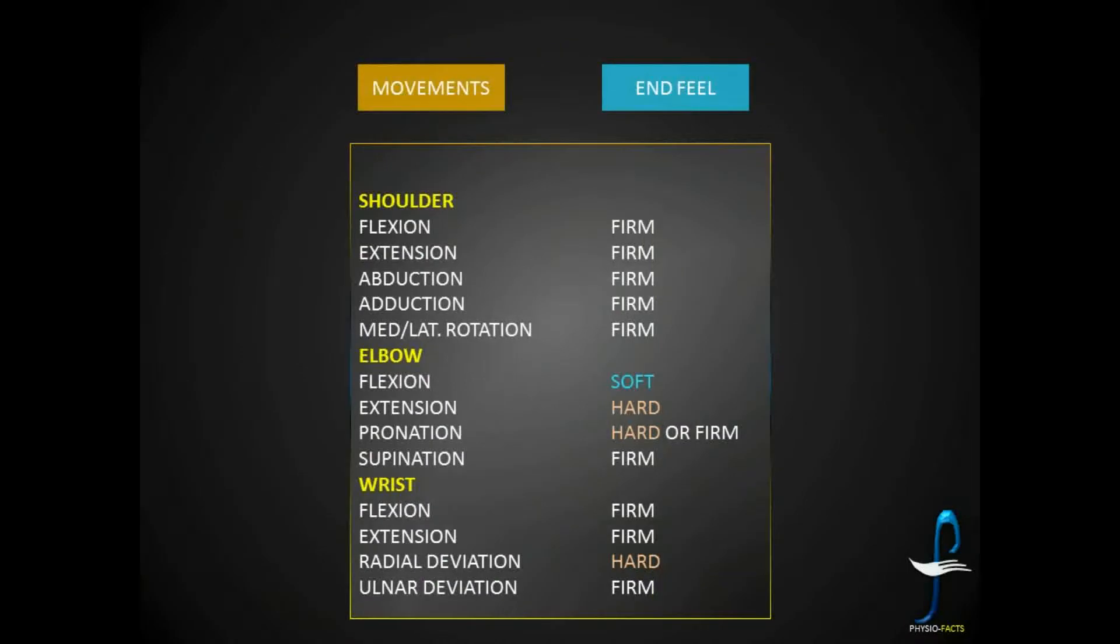One more important point is that end feel has to be checked for each and every movement in the joint. Let us see the individual end feel of each movement in the body: shoulder, elbow, and wrist. Most of the end feels of joint movements are firm tissue stretch. There are few joints or movements that possess soft and hard end feels.